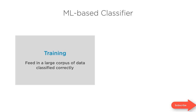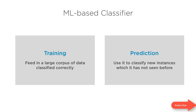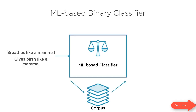Your ML based classifier needs to be trained. You need to feed in a large corpus of data that has been correctly classified — this is the corpus your classification model will use to learn from. Once you have a fully trained model, you'll use it for prediction: classifying new instances that the model has never encountered before.